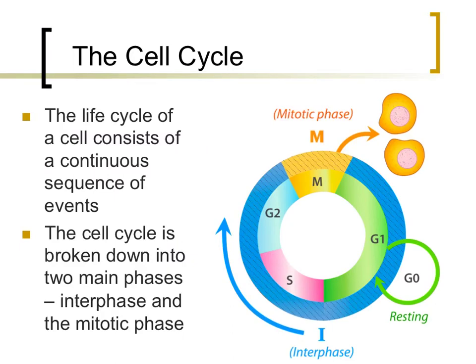The cell cycle is the life cycle of the cell — all the events that occur between the time that one cell is formed and when it reproduces. The cell cycle is a continuous series of events, even though it can sometimes look like the cell is inactive at times. There are two main phases of the cell cycle: interphase and the mitotic phase.